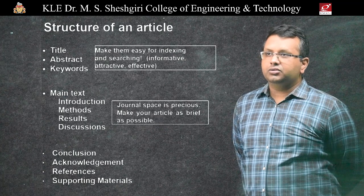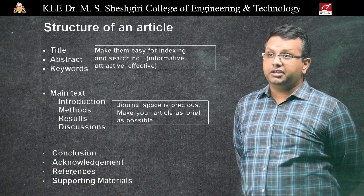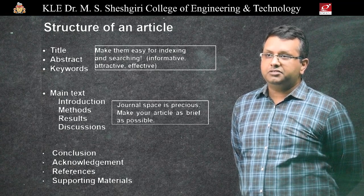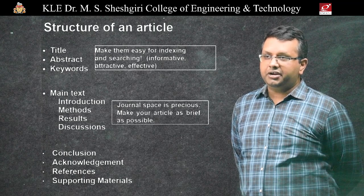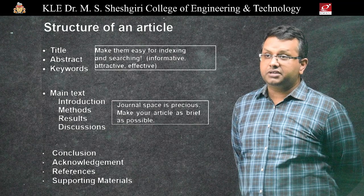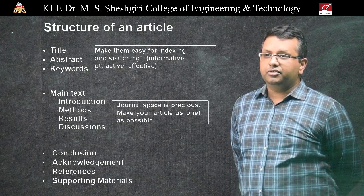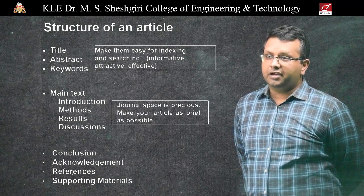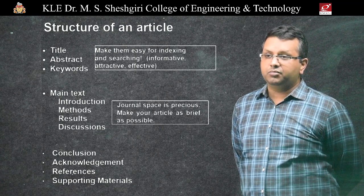The structure of an article looks like this. You have the title, abstract, and keywords, which should be easy for indexing and searching — they must be informative, attractive, and effective. The main text includes the introduction, methods, results, and discussion. Remember, journal space is precious, so one must be as brief as possible. Lastly, you will have the conclusion, acknowledgement if required, references, and supporting materials.